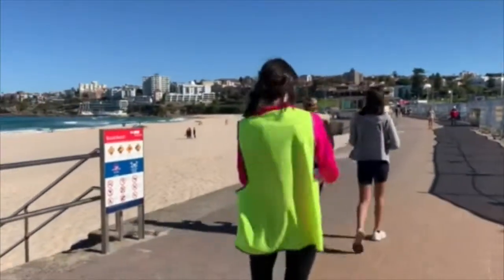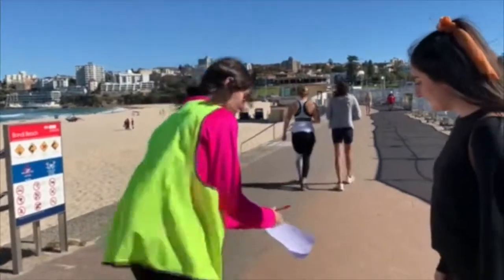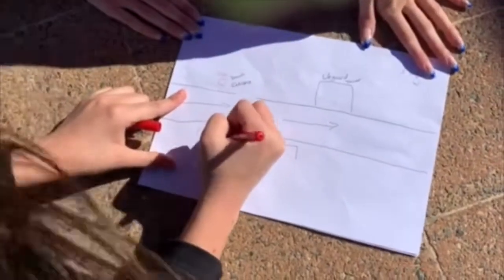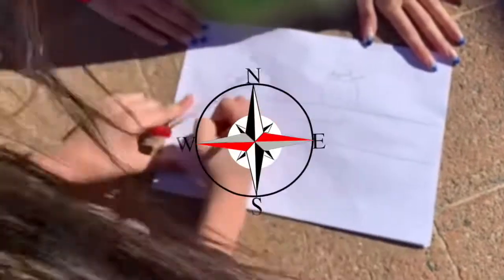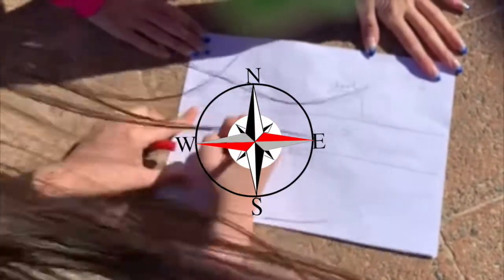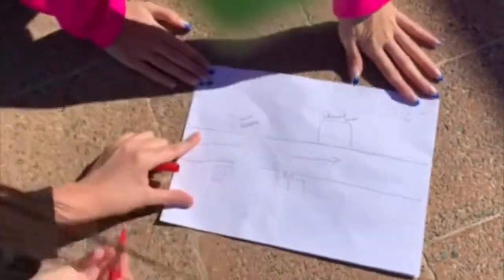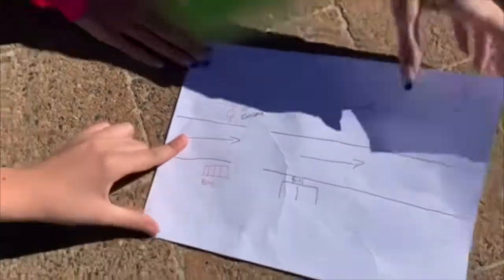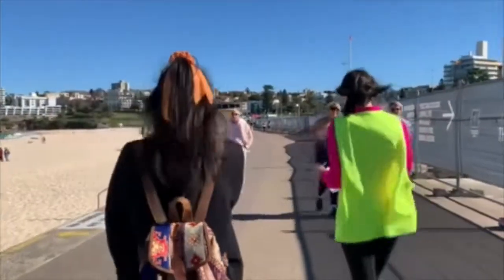Students will then have some time before they start walking to create their own version of this map in their workbooks. They will also be instructed to label on the map which way north, south, east, and west will be. This could be made easier by informing the class that the beach itself will be on the east side.